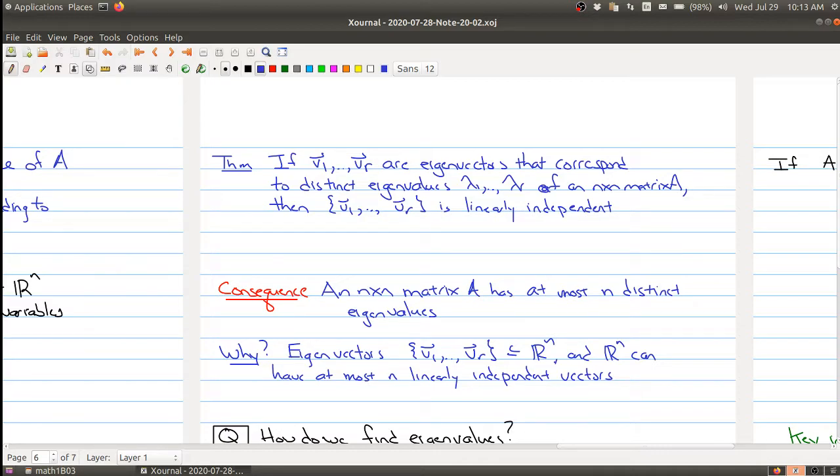But because they're in Rn, I'm forced to have at most n of these. So that's kind of a nice useful consequence too, that we're only going to be seeing n distinct eigenvalues when we're looking at it.